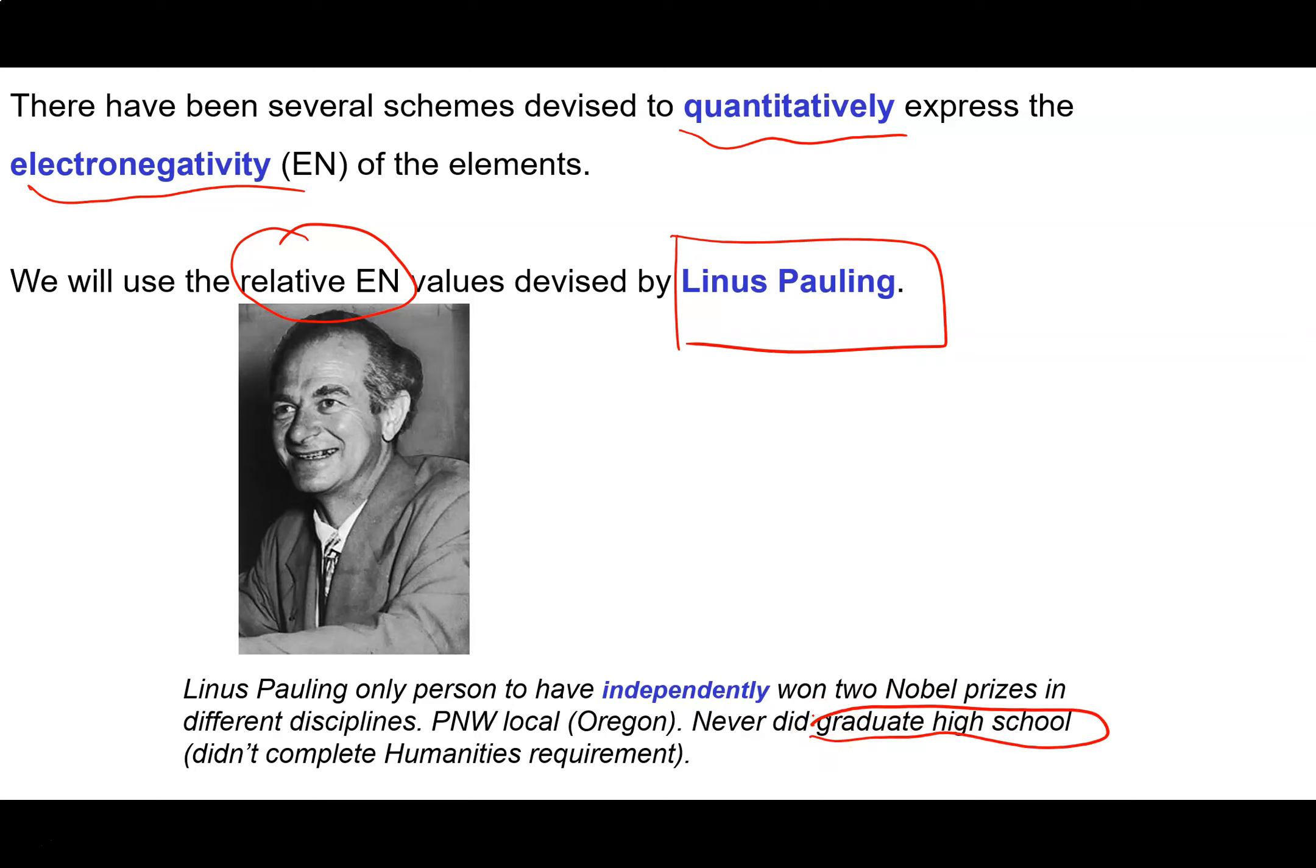Now another interesting fact about Linus Pauling is he never did graduate high school. He refused to complete the humanities requirement because he was really more interested in math, physics, chemistry, stuff like that.